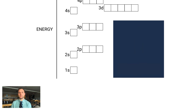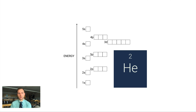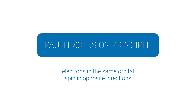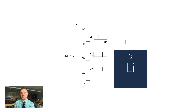Helium has two electrons, both going into the 1s subshell — written as 1s². Notice the second arrow points down. That's the Pauli exclusion principle: electrons in the same orbital will spin in opposite directions. These electrons are both negative, and spinning in opposite directions makes them more comfortable sharing an orbital.